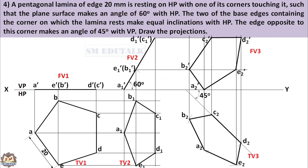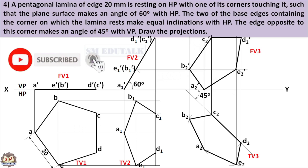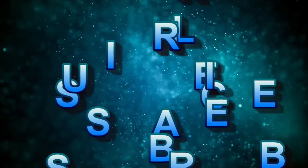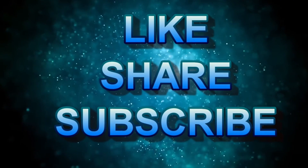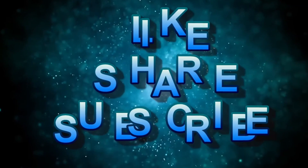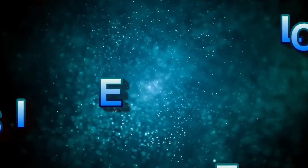Use thick lines only for drawing the front view and top view of all three stages. All other lines and arcs should be drawn with thin lines. Don't forget to do dimensioning. In the next video, I will explain the fifth problem in the same position — inclined to both planes. If you have not subscribed the channel yet, please support me by subscribing and clicking the bell icon. Share this video with your friends. Thank you.